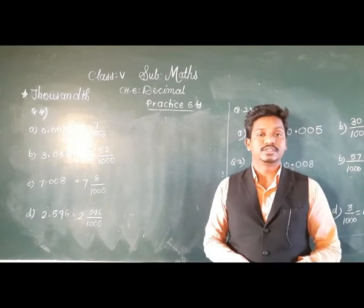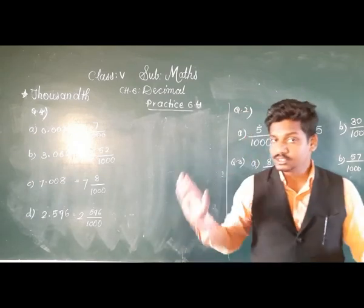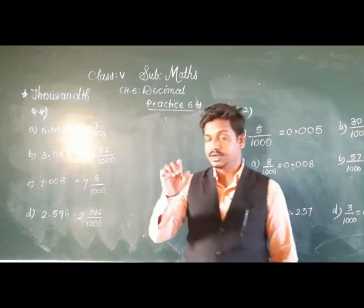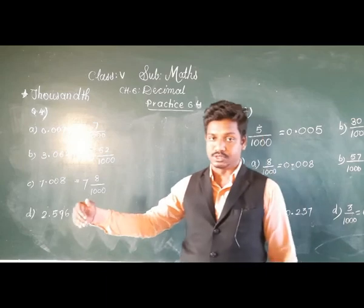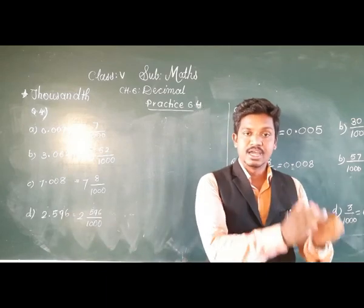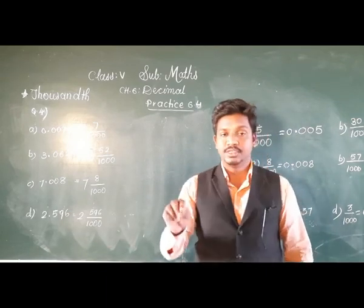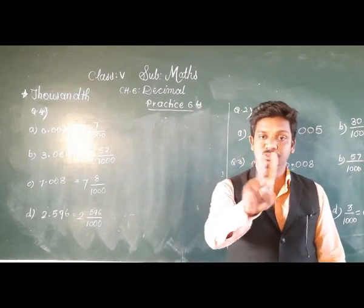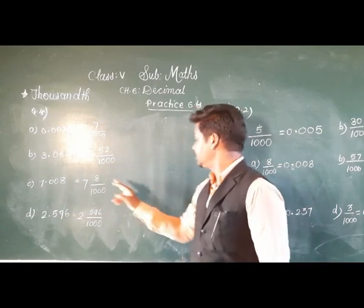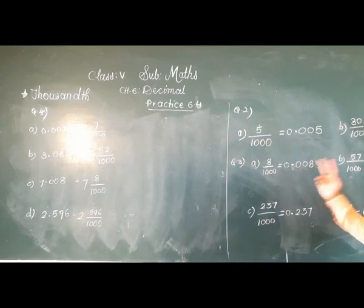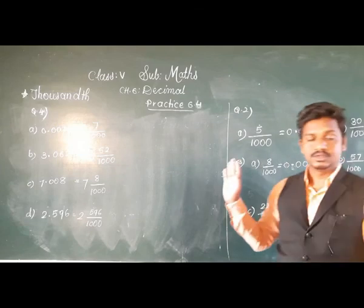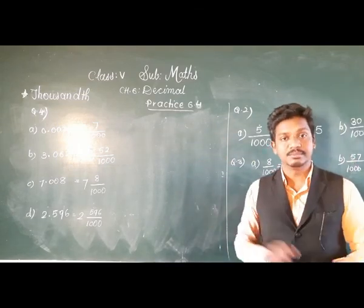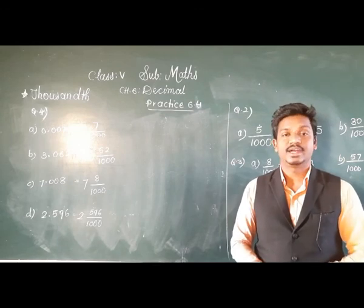I hope you have understood hundredths and thousandths. All the concepts are the same — just the decimal places differ due to the denominators. When the denominator is 10, there is 1 decimal place; when 100, there are 2 decimal places; when 1000, there are 3 decimal places. If you have any doubt, ask me immediately. Thank you and have a nice day.